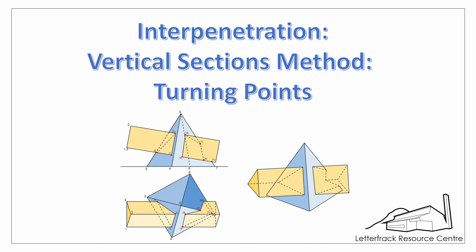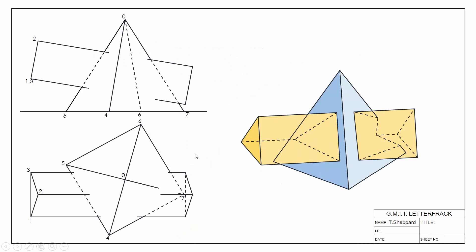We'll begin by looking at our examples. Here we can see our 3D version of our objects, our front elevation and our plan view. The objects we have to deal with this time are a square-based pyramid and a triangular prism which has been inclined and pierces our pyramid on one side and then exits out on the far side.